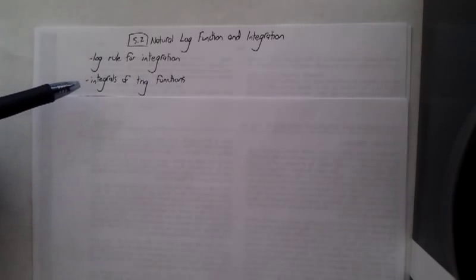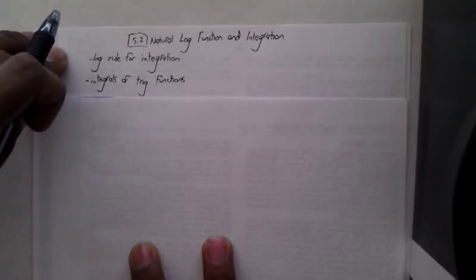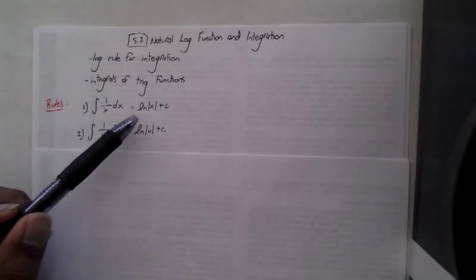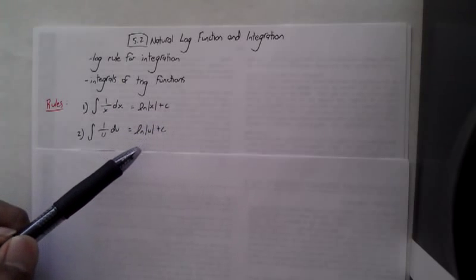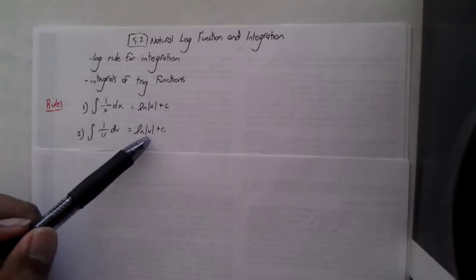Section 5.2 deals with the natural log function and integration. I'll be discussing the log rules for integration, and then integrals of trig functions, which I'll cover in the video after this one for sake of space. The two basic rules for integrating with natural logs: the integral of 1/x dx is the natural log of |x| + c. With a u-substitution, it's the same except you have u inside the absolute value, plus c.